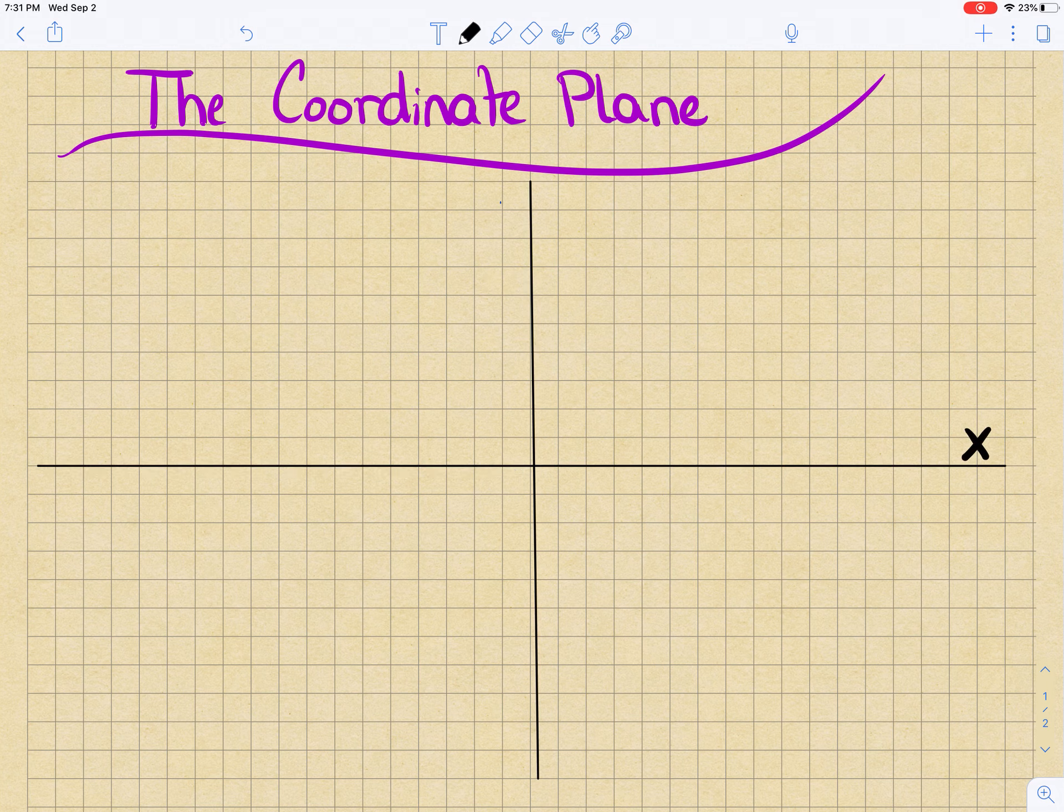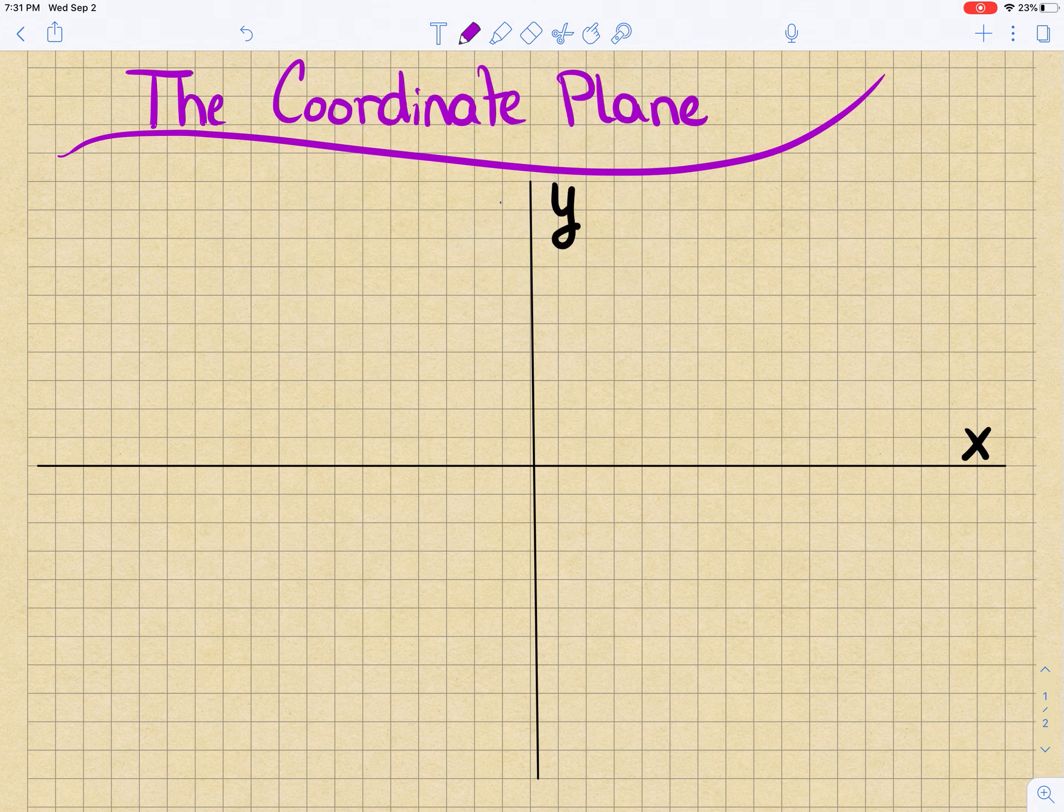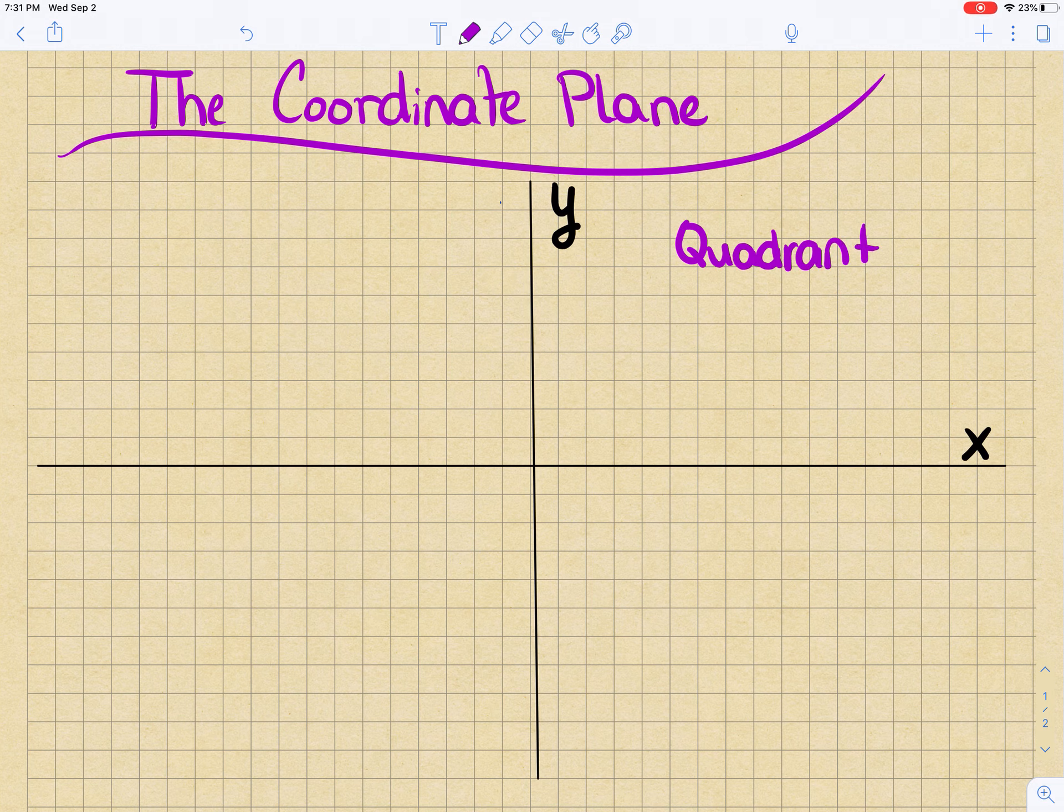Remember, this is going to be your x-axis, and this is going to be your y-axis. This is quadrant 1, and this is one of the few places that we still use Roman numerals. The x and the y are positive in quadrant 1.